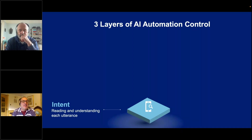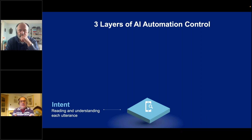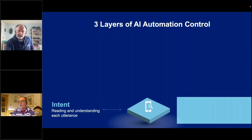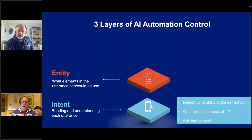Layer one is the intent gathering piece. A conversation comes in and by reading what the customer said — the full sentence or sentences — the intent gatherer AI asks: what is the intent of that? Do they want to make a payment? Can't they make a payment? That's where you then route them — down the payment route, or perhaps an income and expenditure route, depending on circumstances.